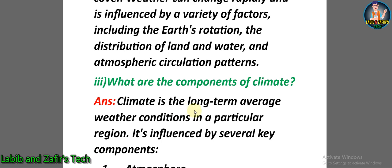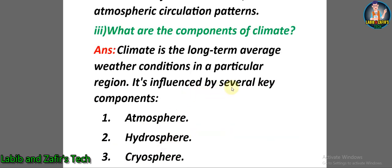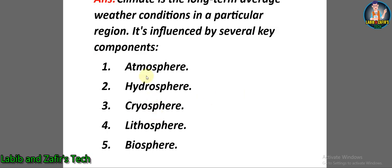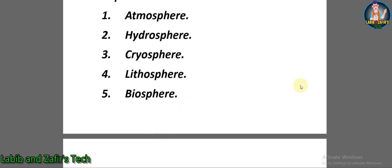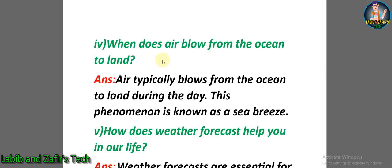Short question number three: What are the components of climate? Answer: Climate is the long-term average weather conditions in a particular region, influenced by several key components: number one — atmosphere, number two — hydrosphere, number three — cryosphere, number four — lithosphere, and number five — biosphere.